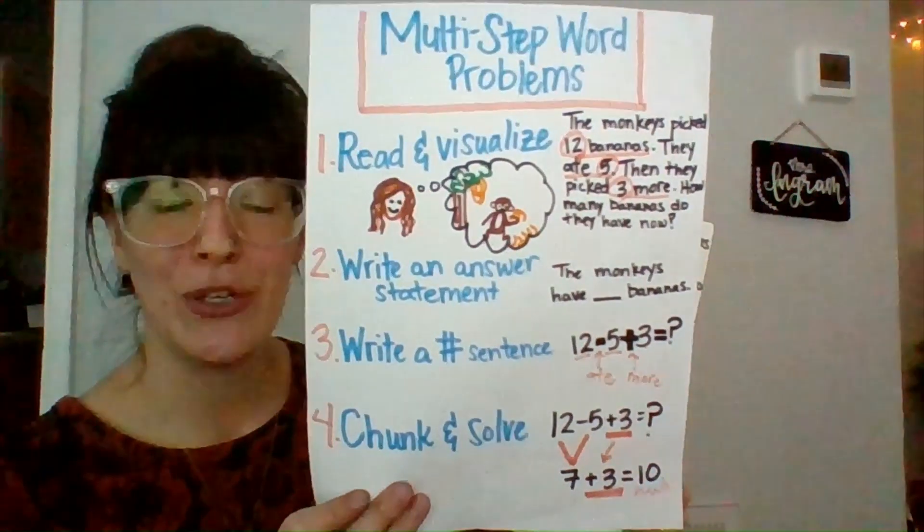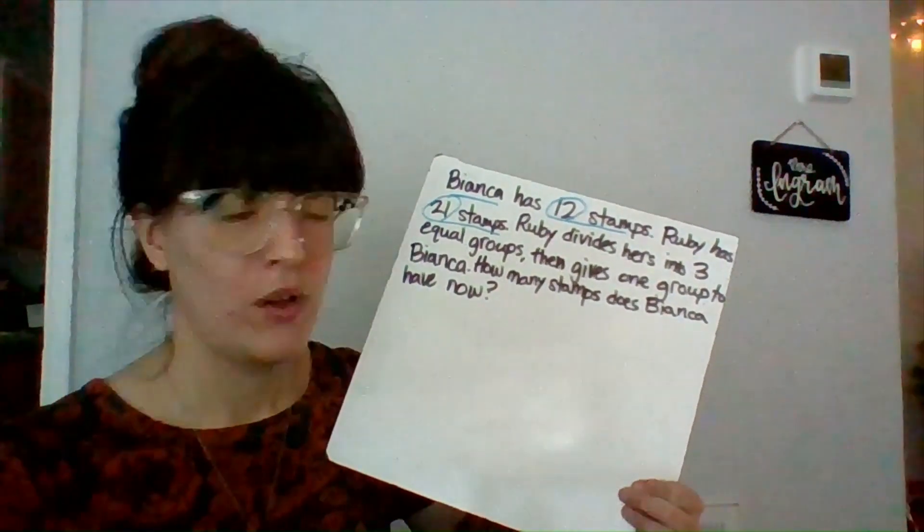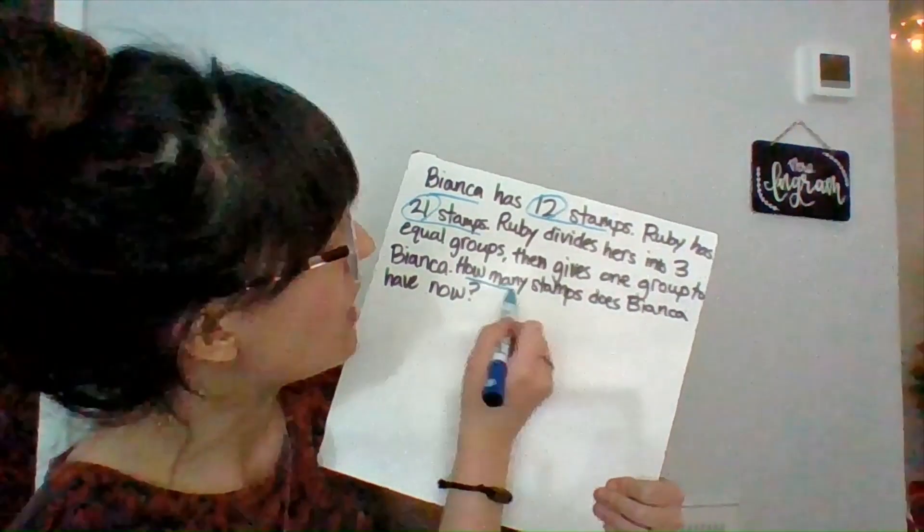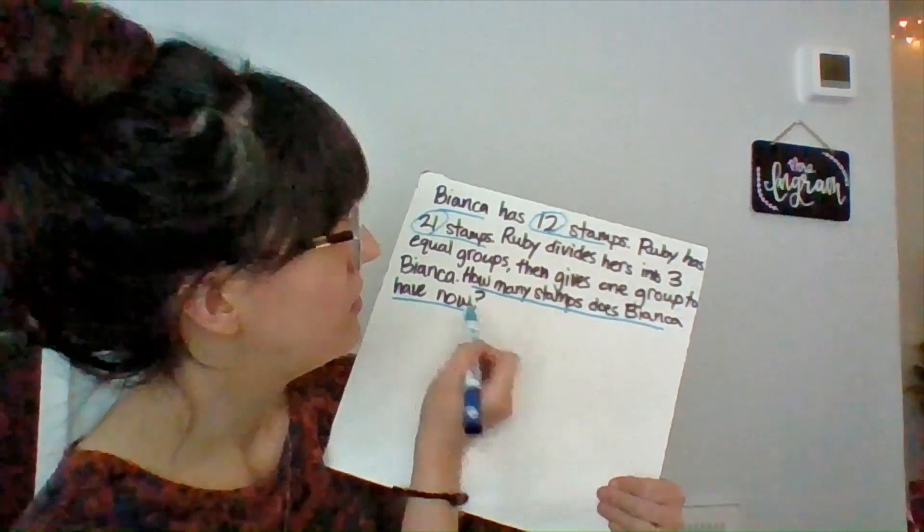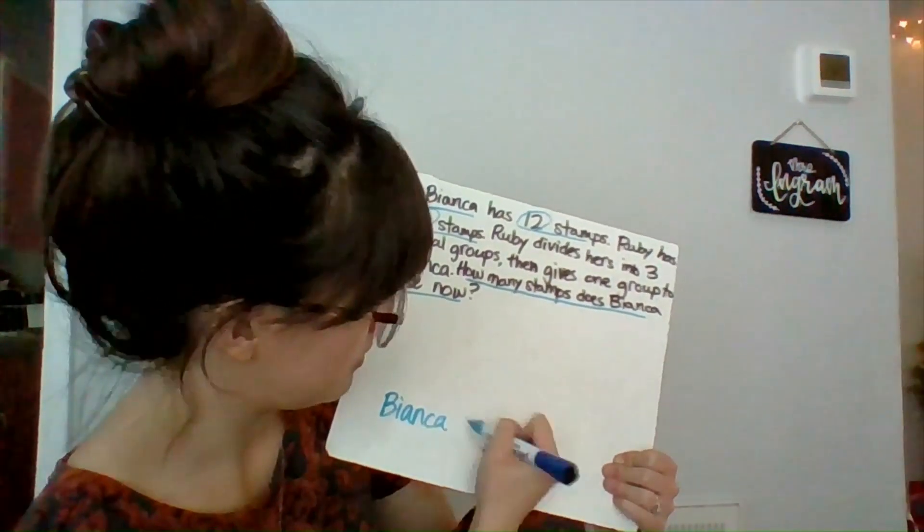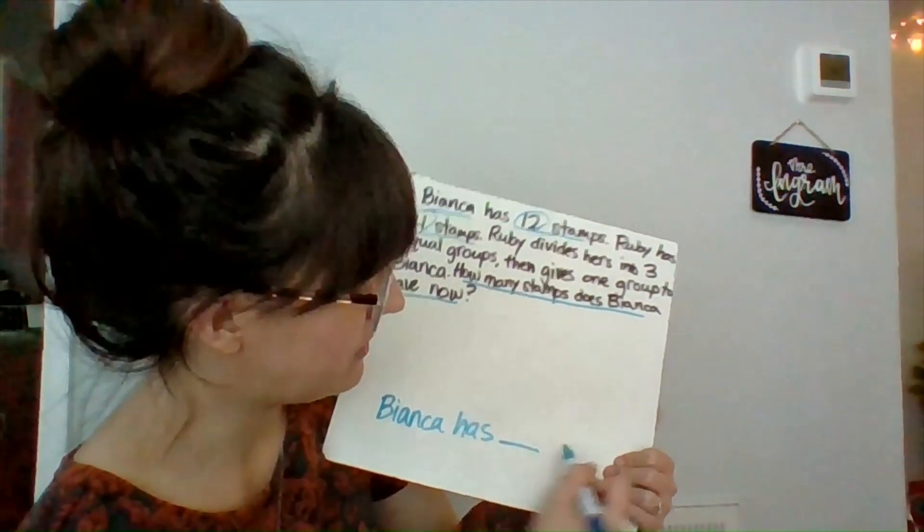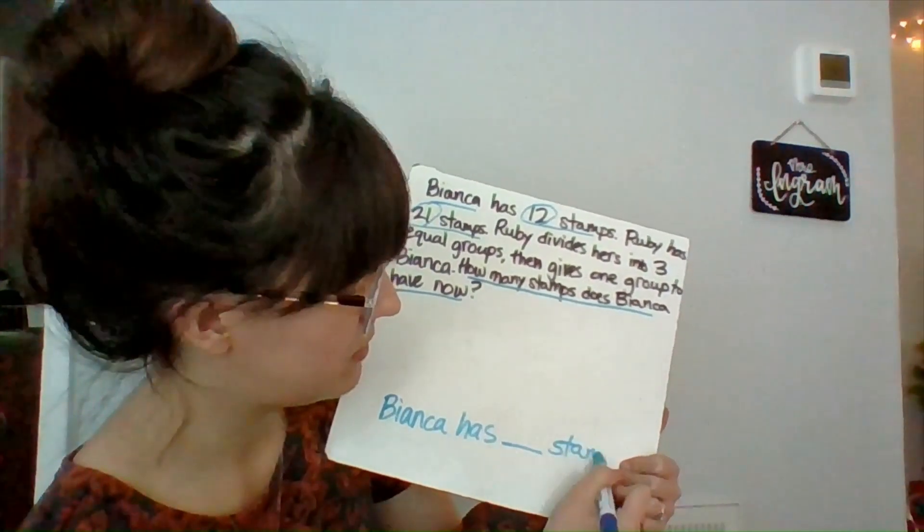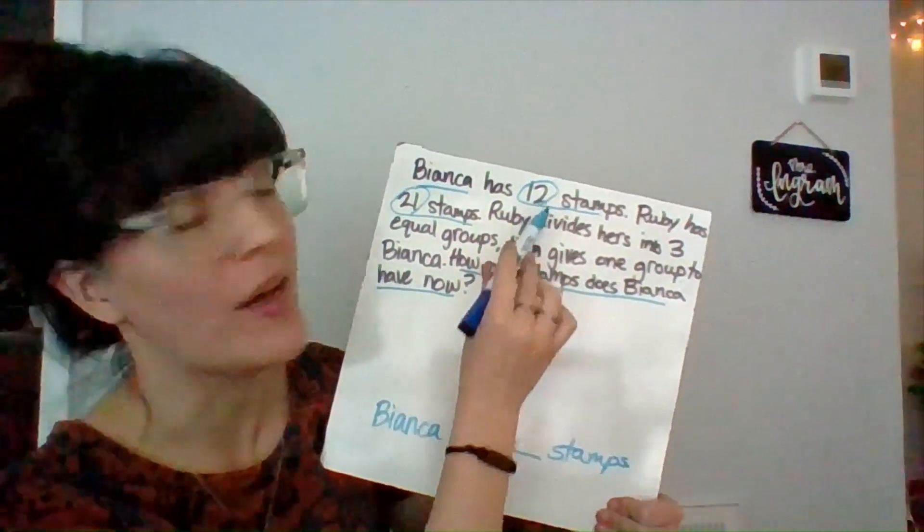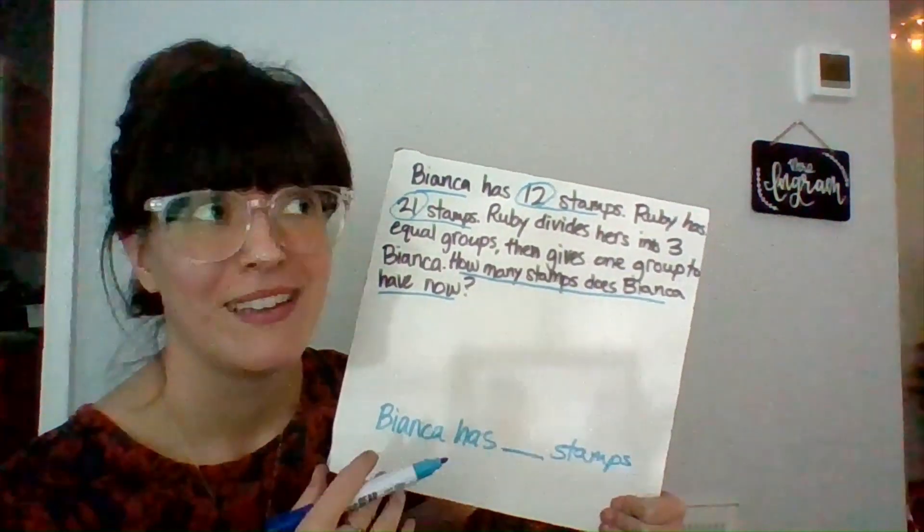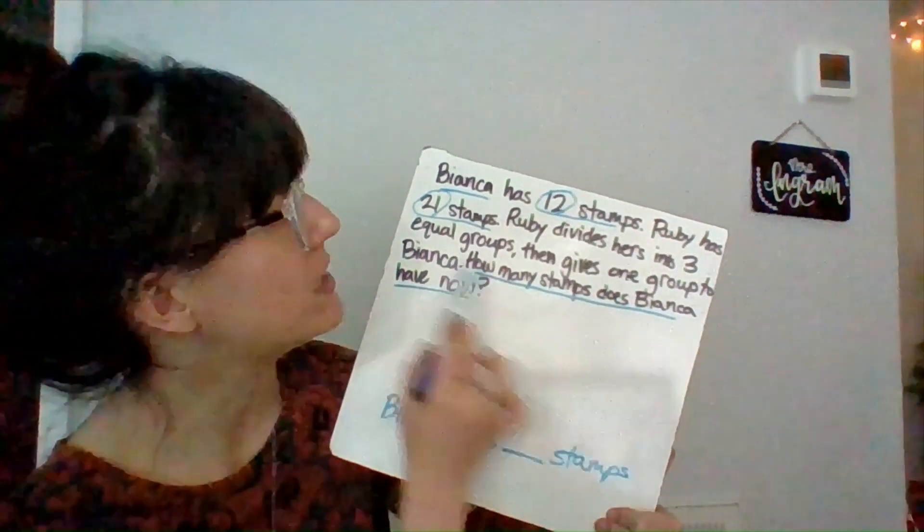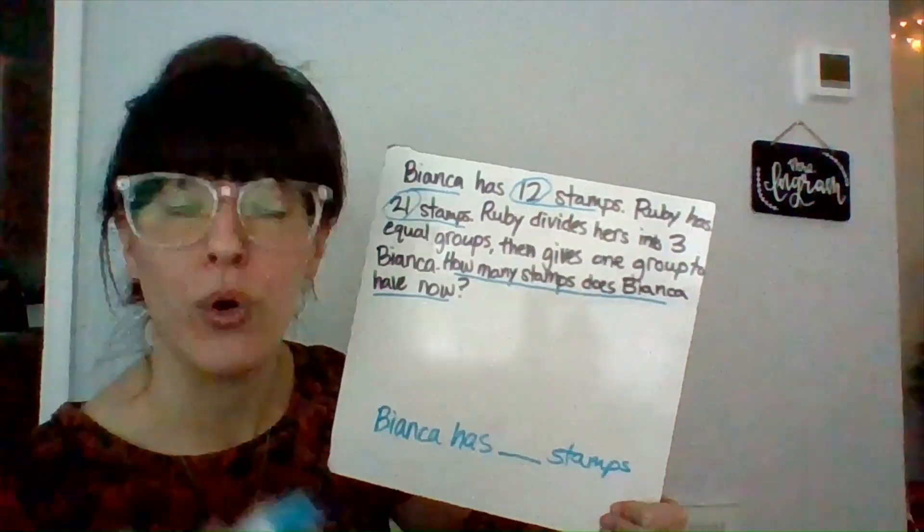So next, step two is write an answer statement. So what would an answer for this problem look like? The question is, how many stamps does Bianca have now? So my answer would be, Bianca has blank stamps. But I know I can't just take this 12 up here from the top because then I didn't actually do a math problem. So I'm going to have to figure out what happens in this problem that gets Bianca either more or less stamps.